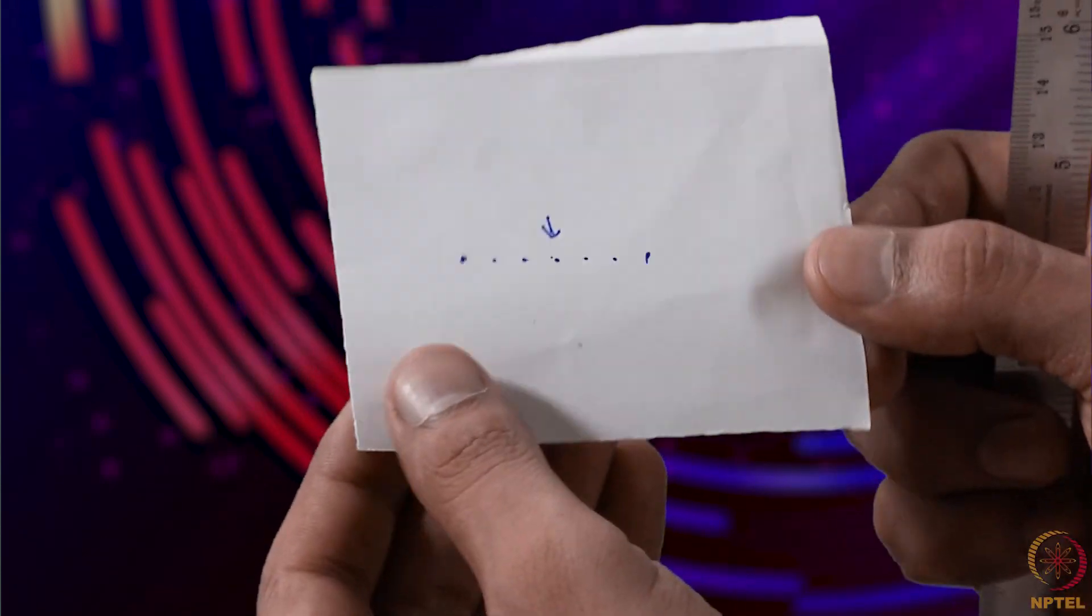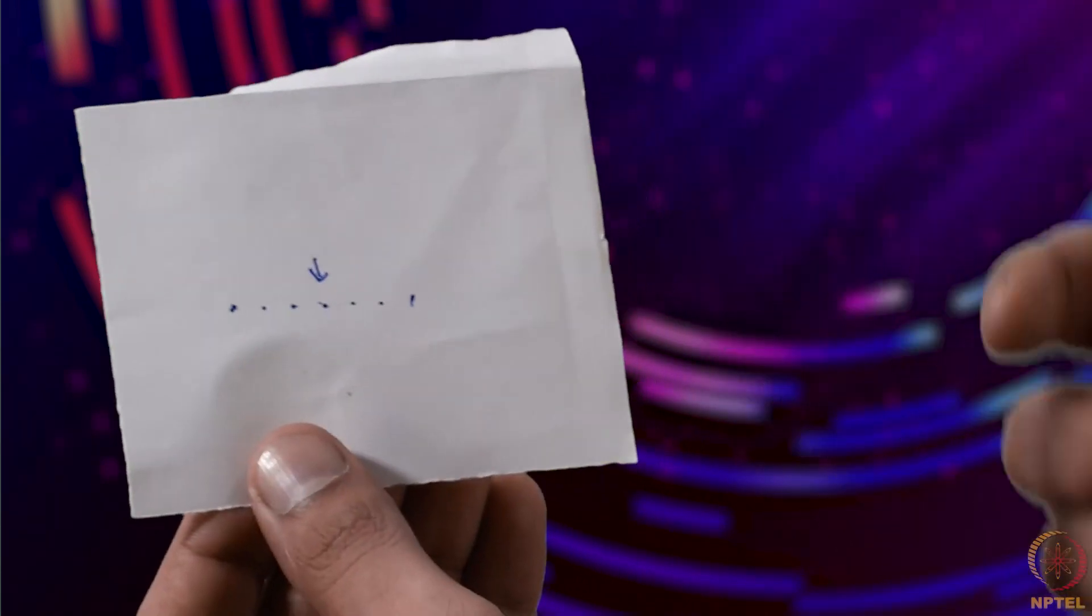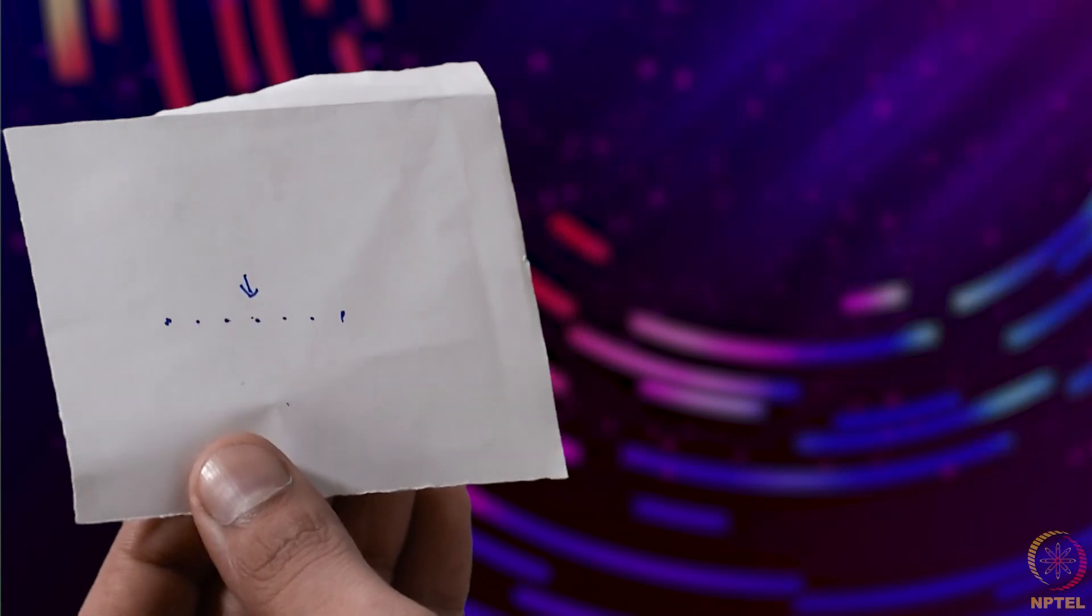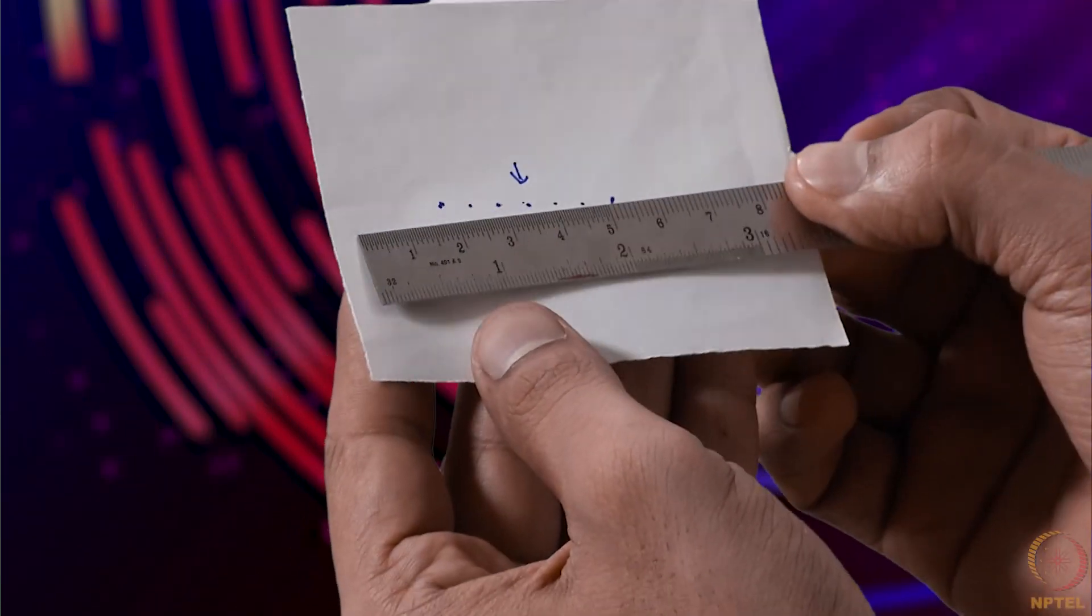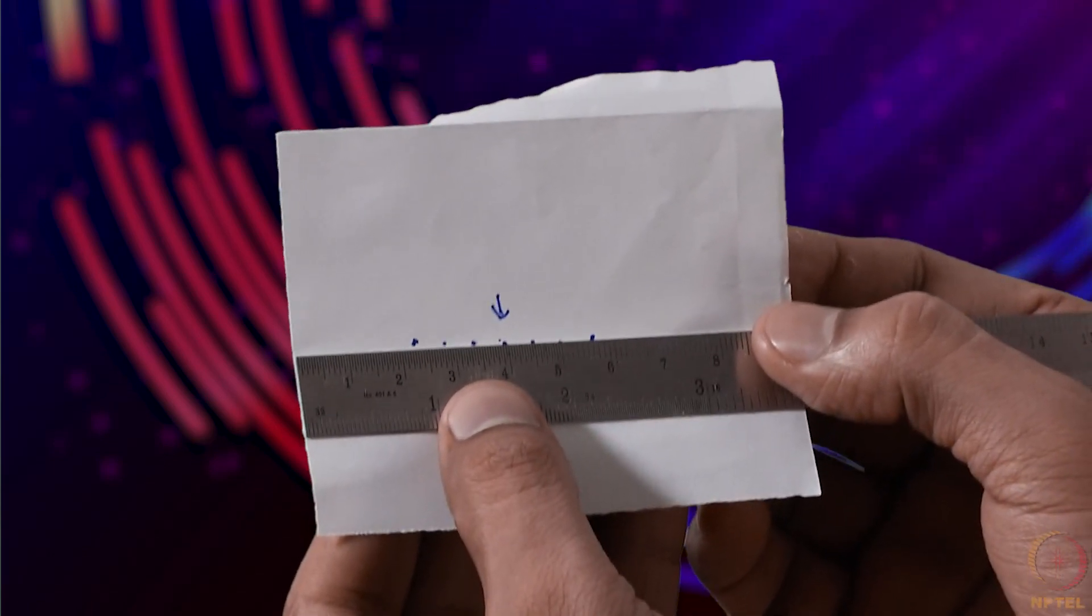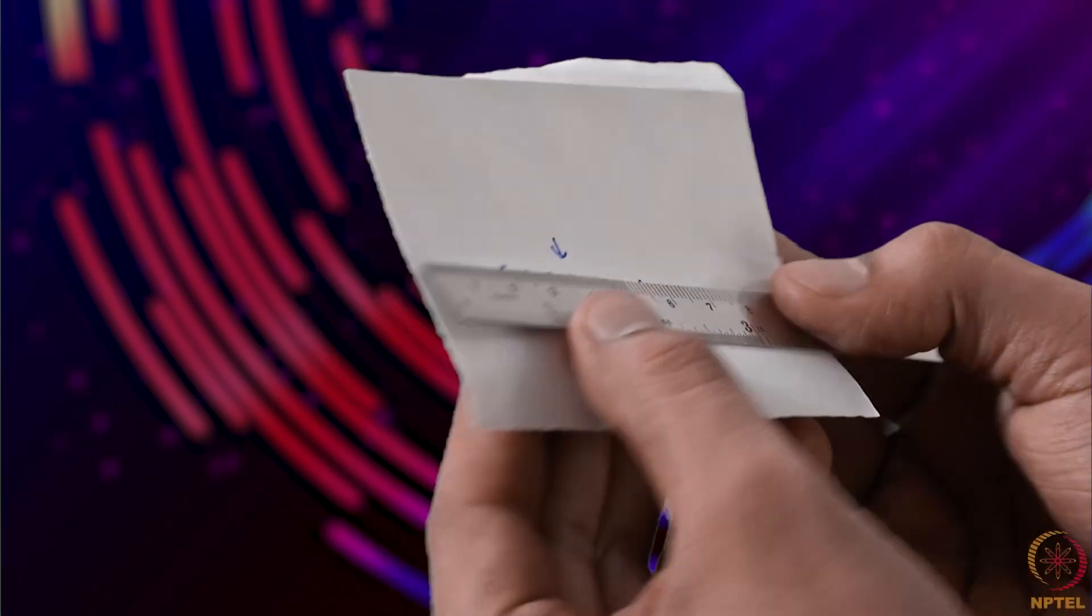This is a diffraction pattern due to single slit that we put it on a paper. This is central maxima and all others are minima positions. I'll just put a scale for you. If you can get any reading from the scale, you can do this for yourself as well.